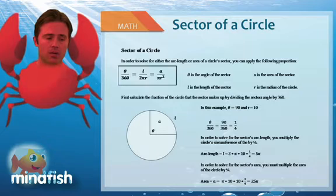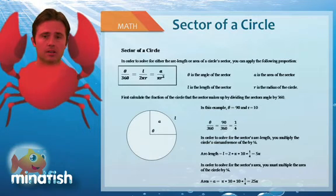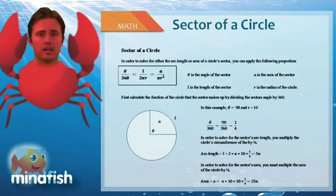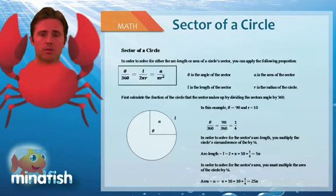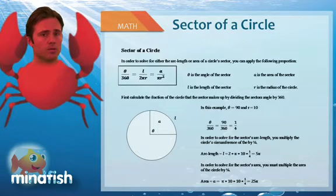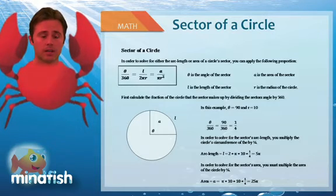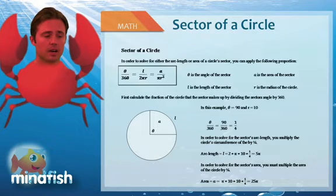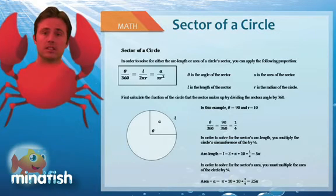So in this problem below, we say that the angle is 90 and r is 10. Using the angle as 90, we establish that the ratio is 1 fourth. And what that means is that this 90 degree sector represents 1 fourth of the circle's area.